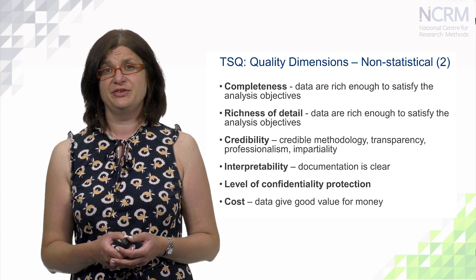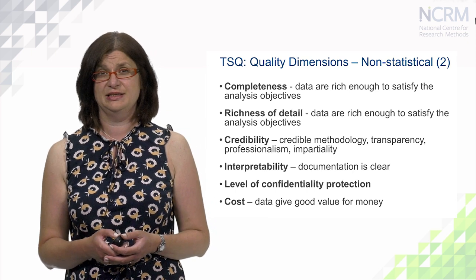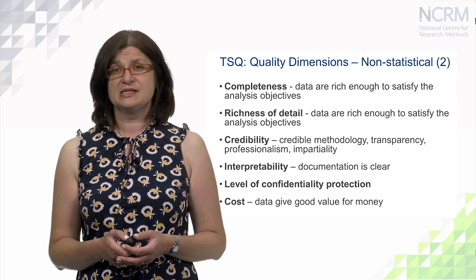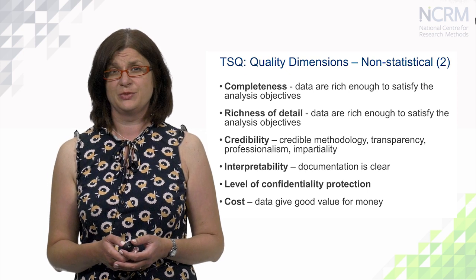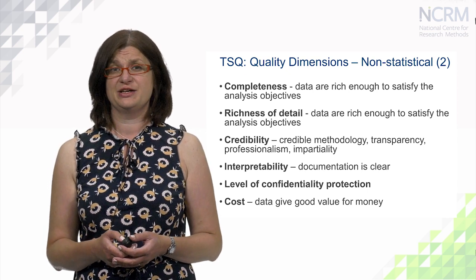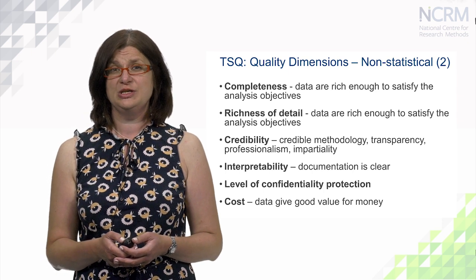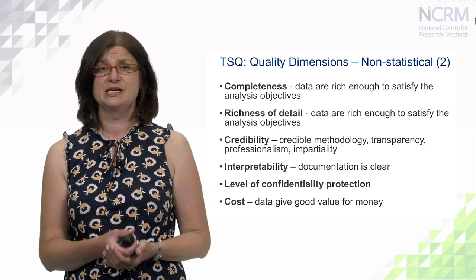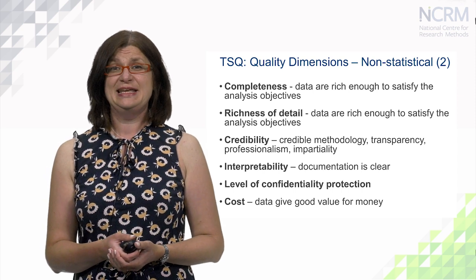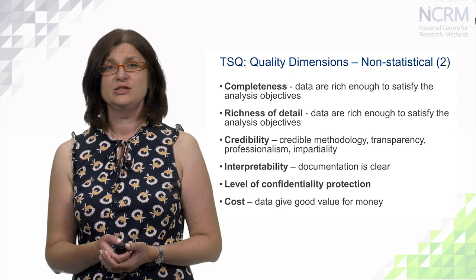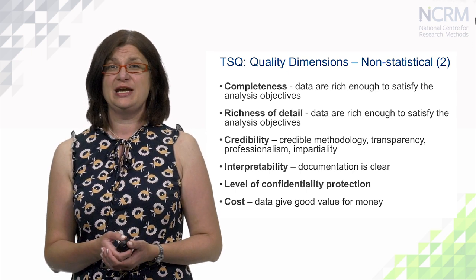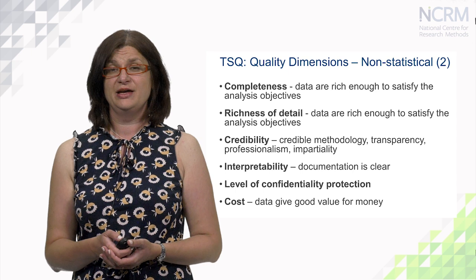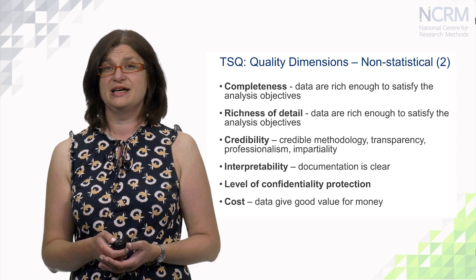Credibility means that credible methodology, transparency, and professionalism were used by the statistical organization. Interpretability of data is also important, meaning that documentation supplied together with the data is very clear. Level of confidentiality protection is also important — it is essential that none of the units or individuals can be identified or disclosed. Costs are also of importance, meaning that data give good value for money. This is not an exhaustive list, but I have mentioned very important components that different statistical organizations use when producing data quality guides.